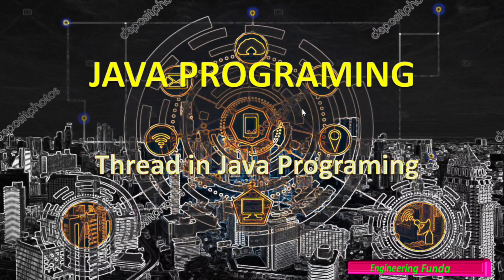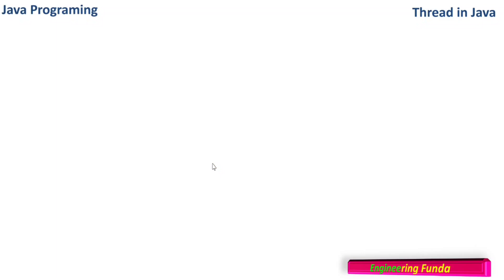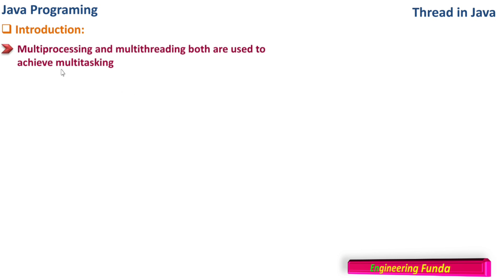Threads are the parallel code that is executed in the system. In Java, we can create a thread and that will run in parallel to the main program. Multiprocessing and multithreading both are used to achieve multitasking in a system. If you want to have a system which can do multiple tasks in parallel or at the same time, then we go with multiprocessing or multithreading.